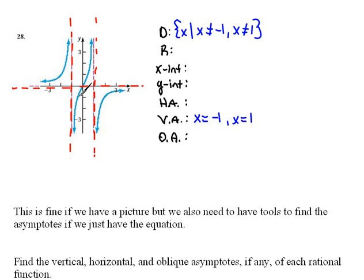For our range, we see that we have a red dashed line here, which is our horizontal asymptote at y equals 0. But the graph is actually crossing through that.